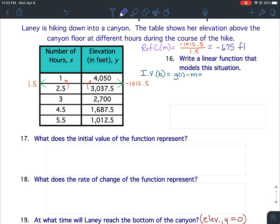And this would be feet per hour. Why is it negative? Because she's hiking down. She's descending into the canyon. So that is why it is negative.